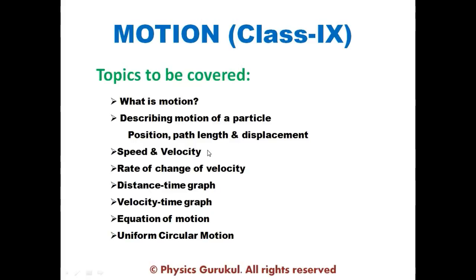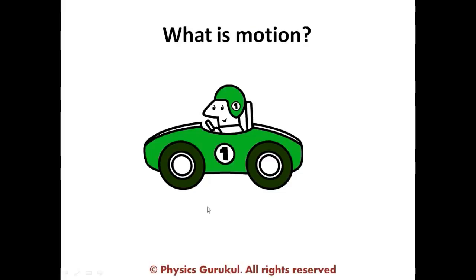So what is motion? Motion is the change of position of an object with respect to time and surrounding. A body is said to be in a state of motion if it changes its position with respect to time and surrounding. Here you can see in the figure — if the car is moving towards the left, this car is changing its position with respect to the surroundings, so we say the car is in a state of motion.